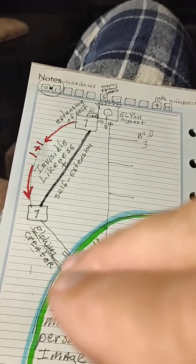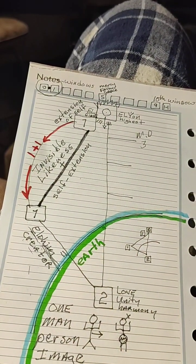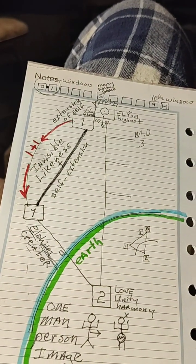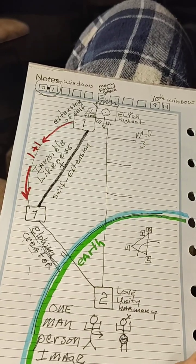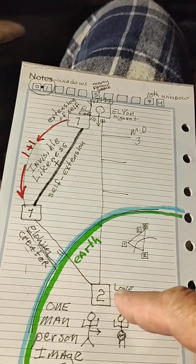Then in creation, earth and humanity is the two, Adam and Eve.